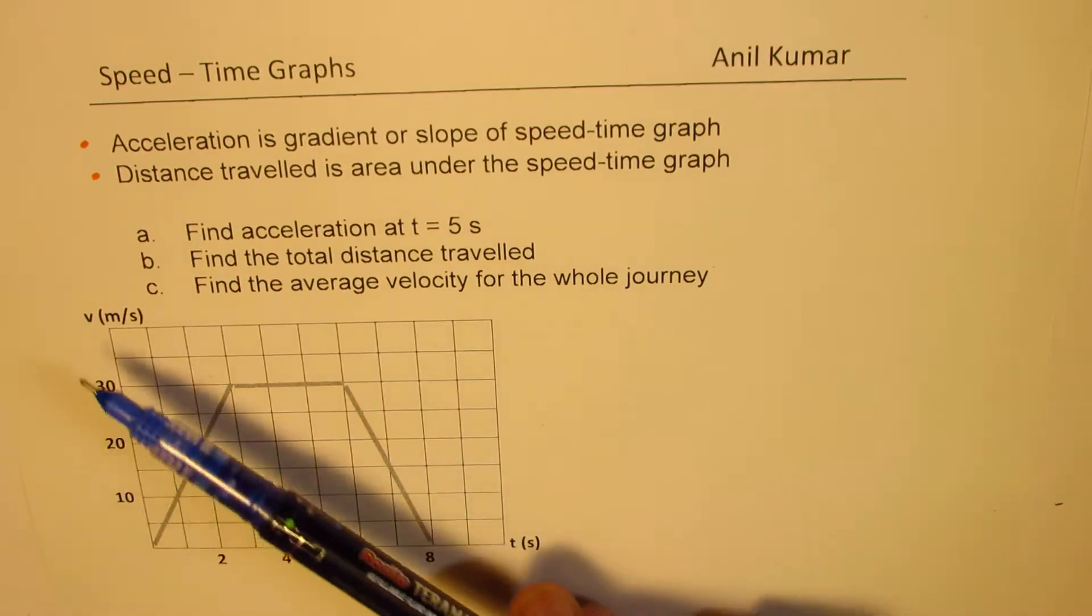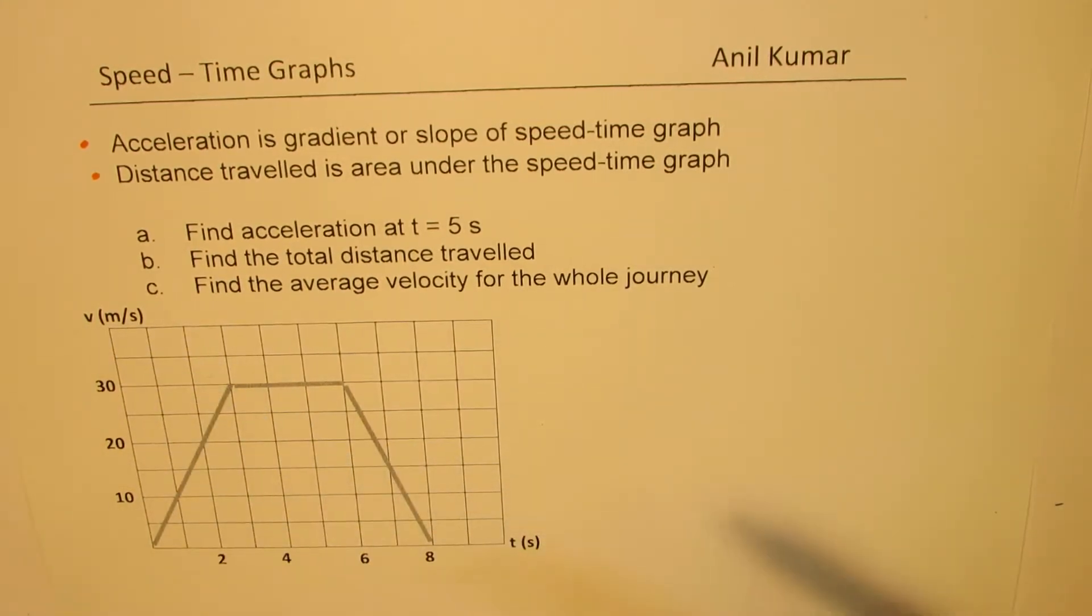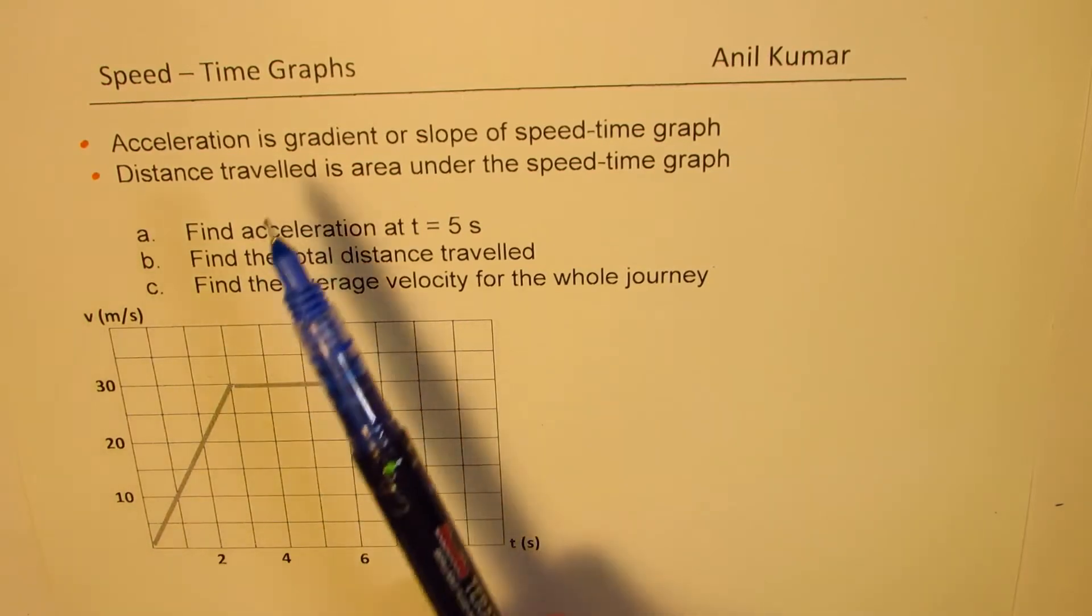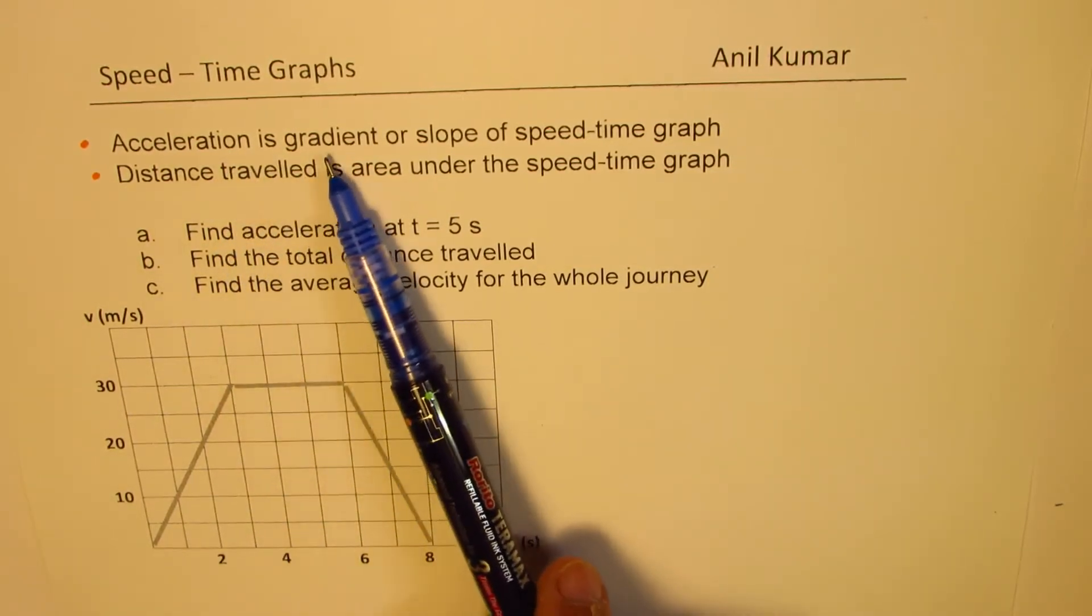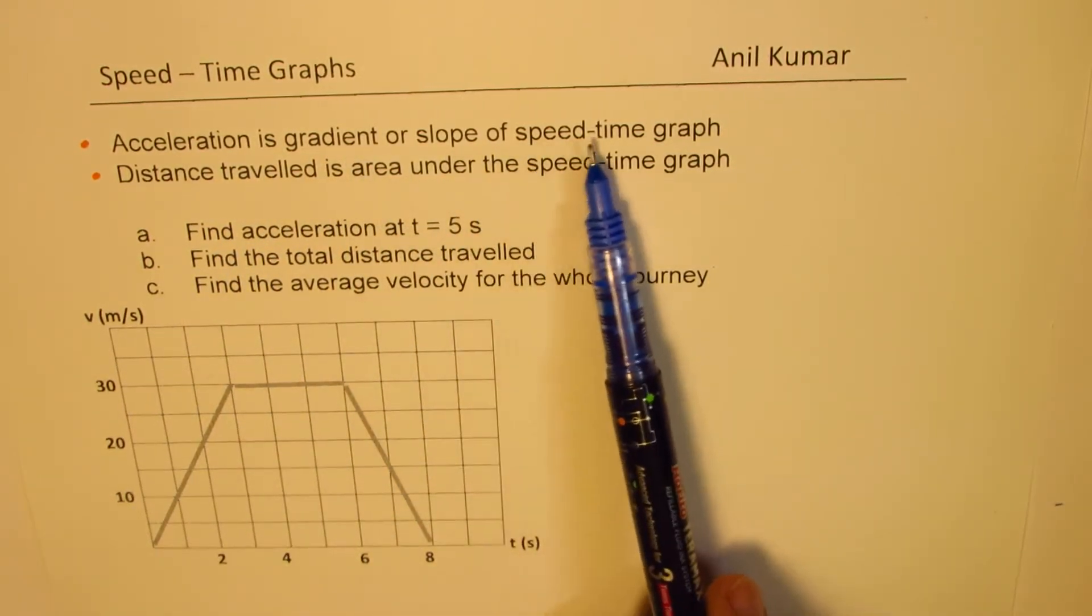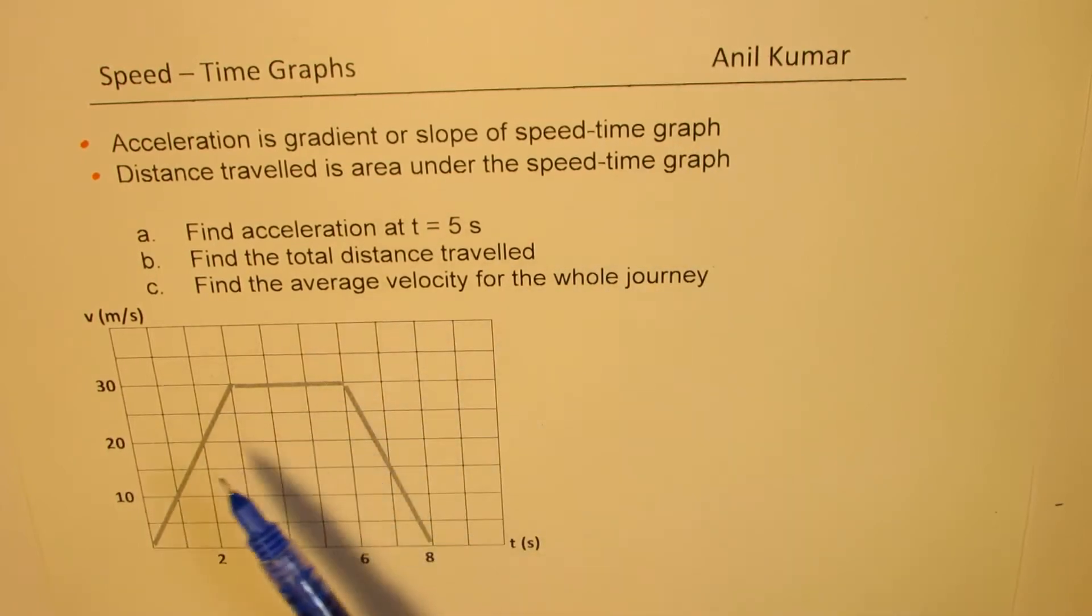Here is a velocity versus time graph which we are going to analyze and answer the given questions. Before we begin, it's important to note that acceleration is gradient or slope of speed time graph. So at any point, if I have to find acceleration, I need to find rate of change of velocity with time.